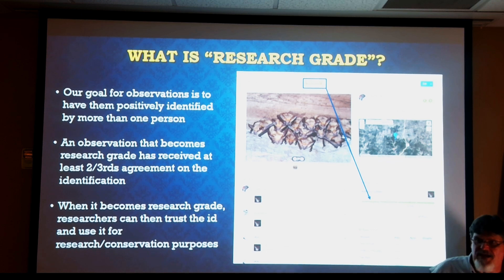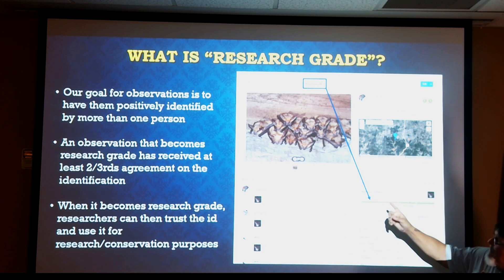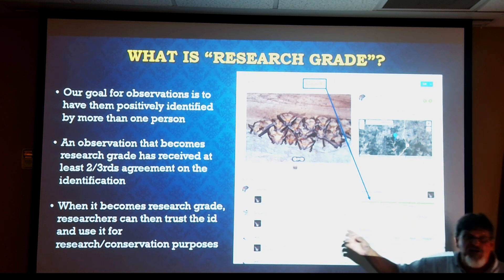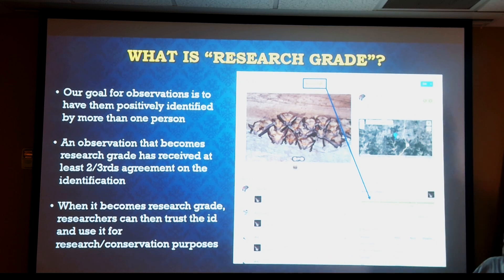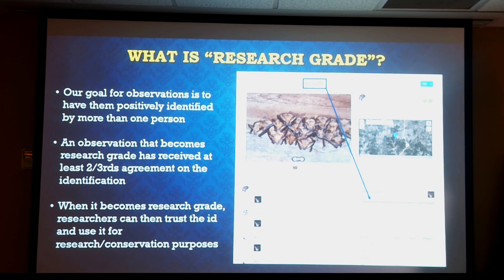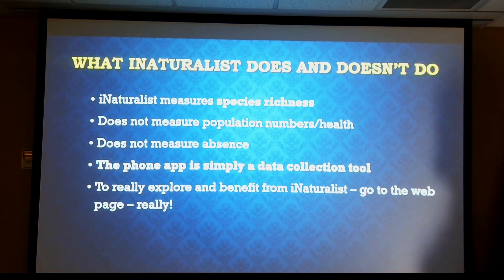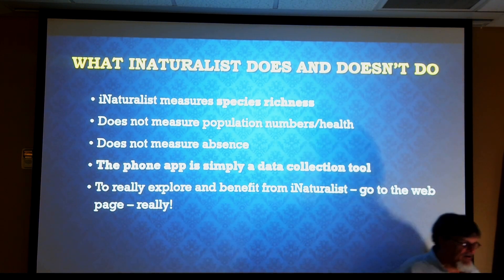Research grade means that two-thirds of the people who have confirmed that observation agree on what it is. When two-thirds agree, it goes to research grade, meaning it's generally trusted at the identification level. When we look at data for our Texas Natural Diversity Database, one of the first things we look for is whether it's research grade. Most people on iNaturalist don't go in and confirm things carelessly — their name is associated with the ID, so they don't want to ruin their reputation.